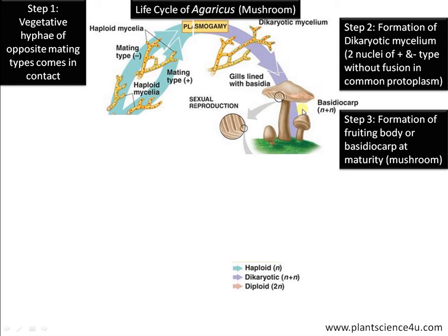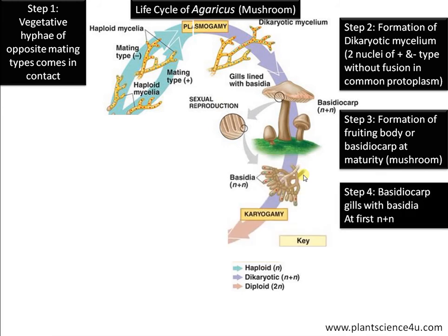This umbrella-shaped structure is called the pileus. On the lower side of the pileus there are gills, which are lined with basidia — the spore-producing structures. Step 4: in the basidiocarp, gills with basidia.